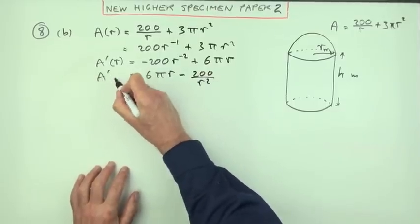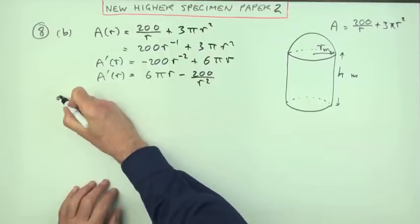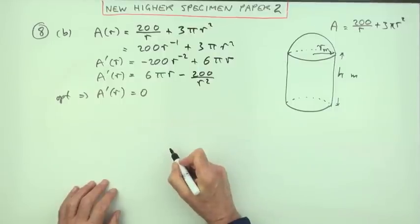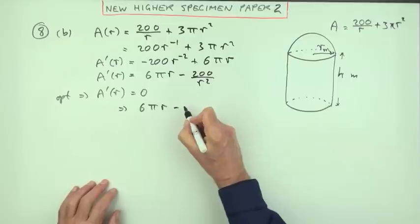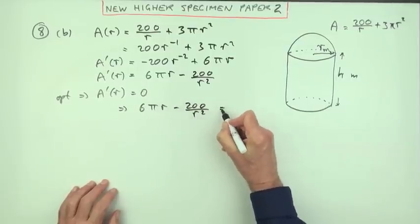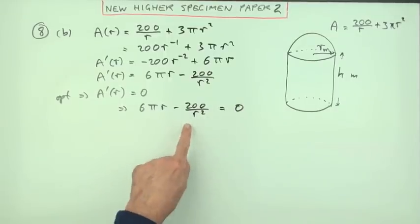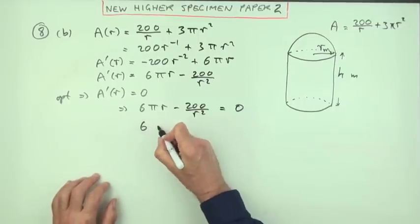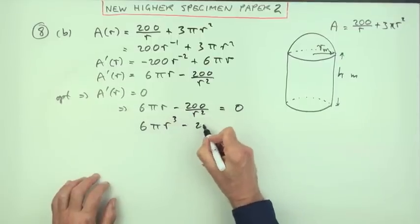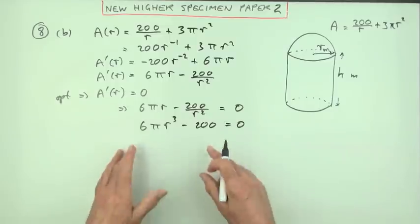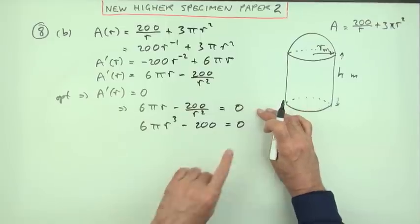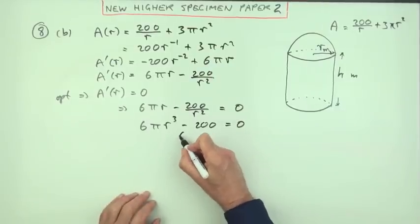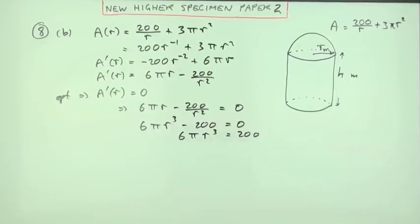I'll get my optimum value when the derivative equals zero. That means 6 pi R minus 200 over R squared equals zero. First thing you notice is it's got fractions. Multiply everything by R squared: 6 pi R cubed minus 200 equals zero. That's the same as taking that term over and leaving the 200.